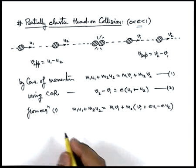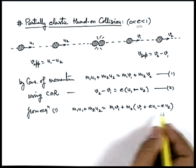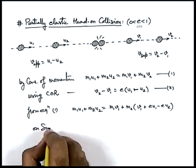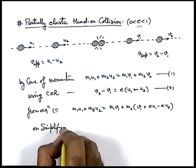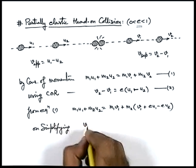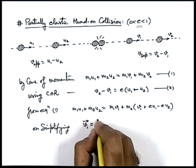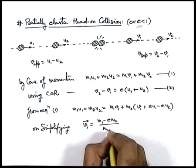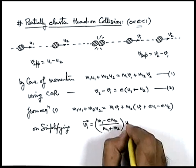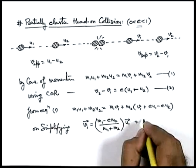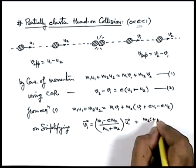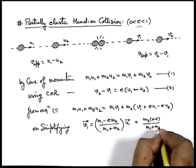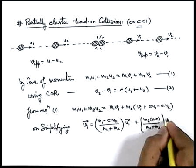Simplifying, we get the value of v-one as: v-one equals (m-one minus e·m-two) upon (m-one plus m-two) into u-one, plus m-two into (1 plus e) upon (m-one plus m-two) into u-two.